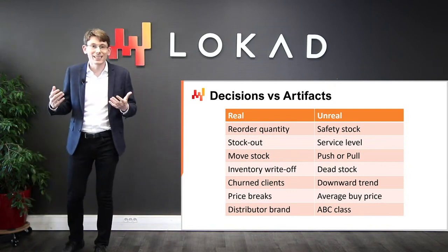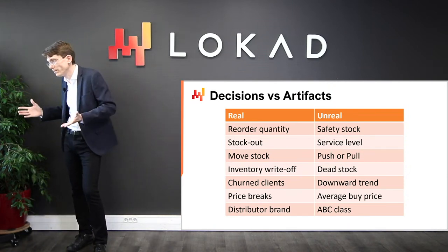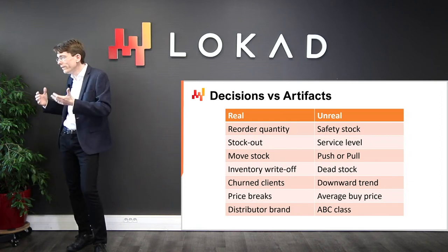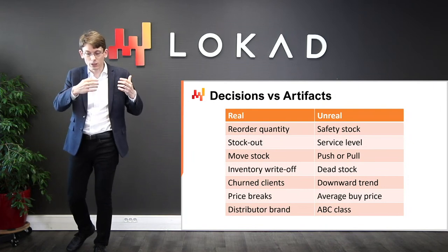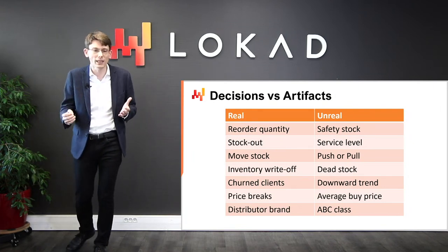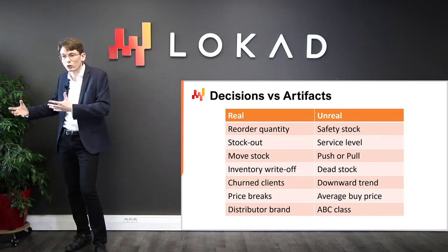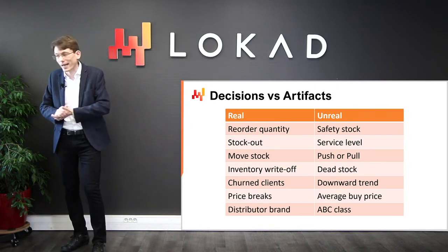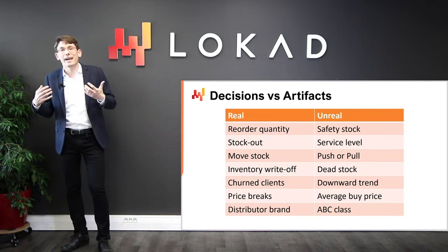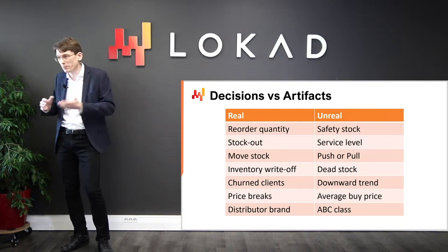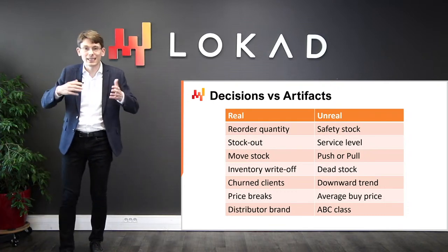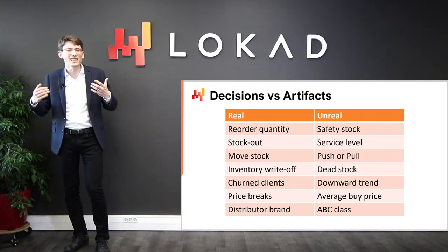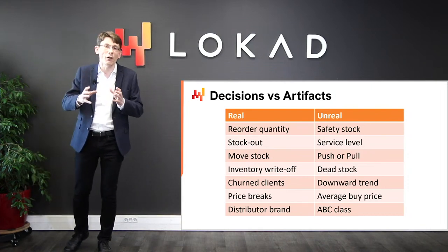The first step to tackle supply chain decisions is to identify actual supply chain decisions. A supply chain decision has a direct, physical, tangible impact on the supply chain — for example, moving one unit of stock from the distribution center to a store is real. As soon as you do that, there is one extra unit on the shelves and one unit missing from the distribution center that cannot be reallocated anywhere else. An artifact, by contrast, has no such direct physical impact. It is typically either an intermediate calculation step or a statistical estimate that characterizes a property of part of your supply chain system.